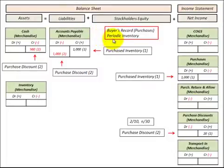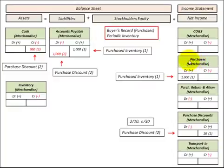First we're going to look at purchases from the buyer's perspective. We have two choices: we can either record our inventory as a purchases item directly to the income statement, which is an expense item, or we can record it in an inventory account as an asset on the balance sheet.